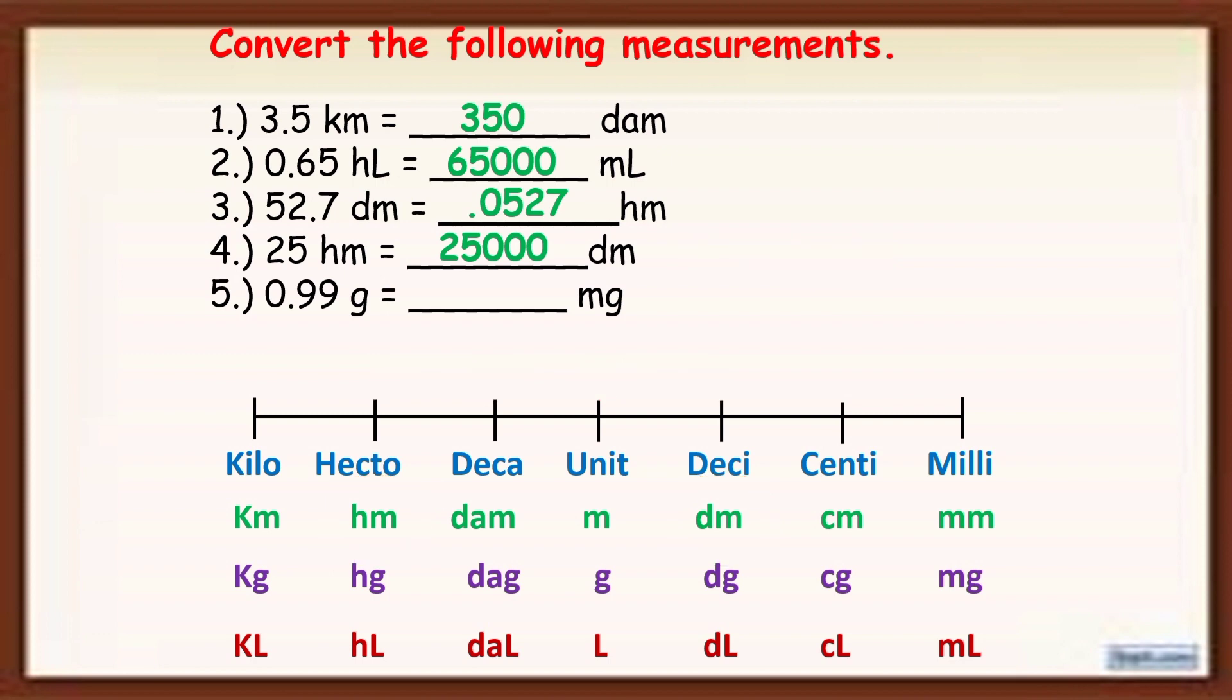Next example, number 5. 0.99 gram to MG or milligram. Again, let's count how many units from gram to milligram. So 1, 2, 3. So, again, from 0.99, we are going to count 3 units. So, 1, 2, 3. Then add 0 to the missing place value. Therefore, our final answer is 990 MG or milligram. Again, yung 0 bago ang decimal point ay mawawala na. Huwag natin ilalagay na 0990 ha. It will become whole number. So, the final answer is 990 MG.